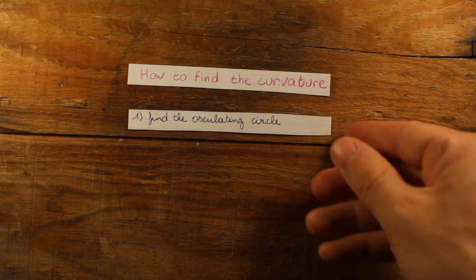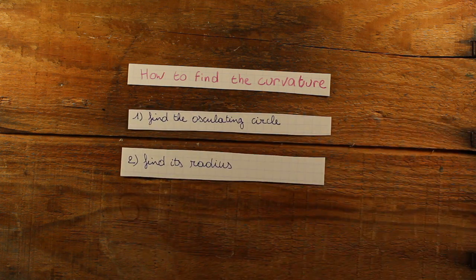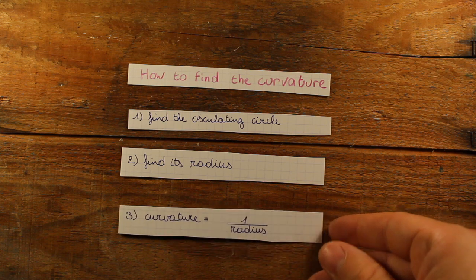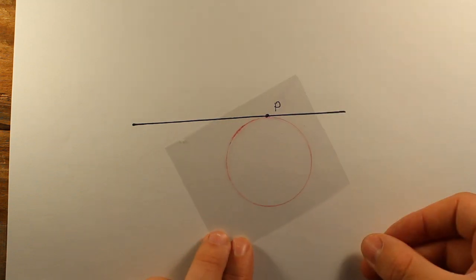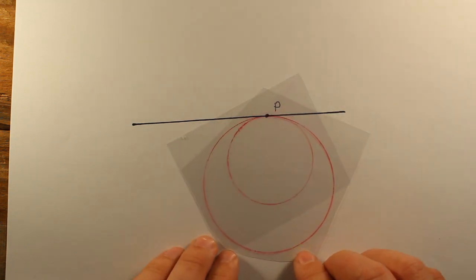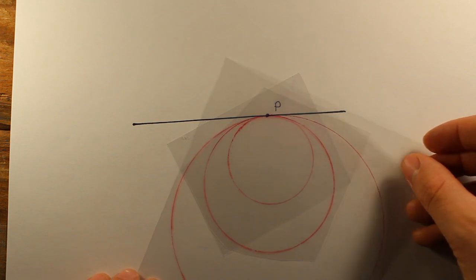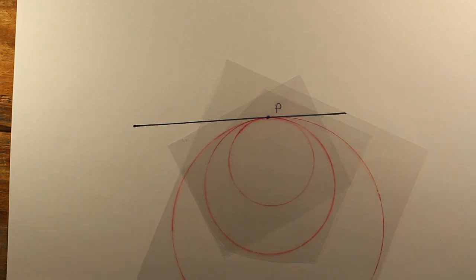So we found a way to define the curvature in any point of any curve you want. First, find the kissing circle in that point, then measure its radius, and the curvature is given by 1 divided by this radius. Let's try this for a straight line. Fix a point and try some circles. However, no matter how large a circle we use, it's always too small. So we effectively need a circle with infinite radius. And what is 1 divided by infinity? It's 0, which is exactly what we'd expect for the curvature of a straight line. So our definition works.